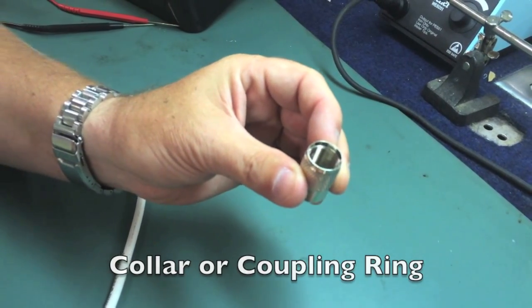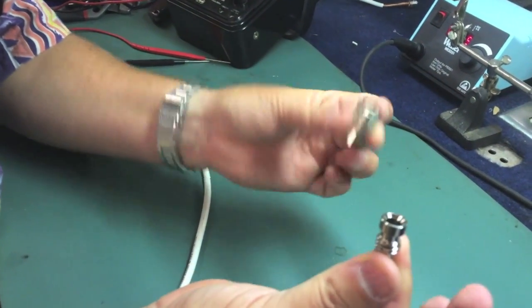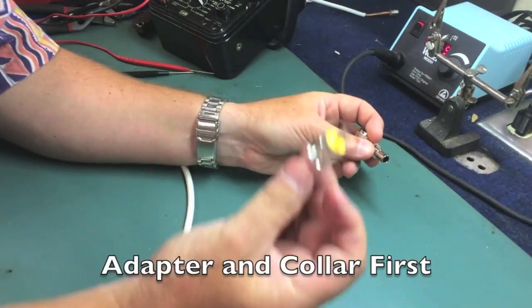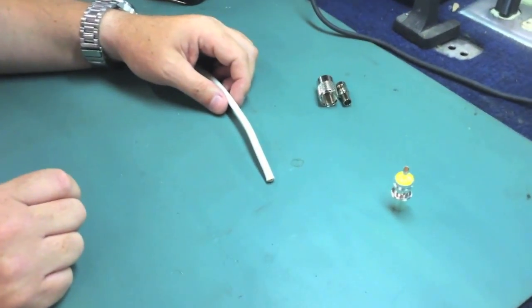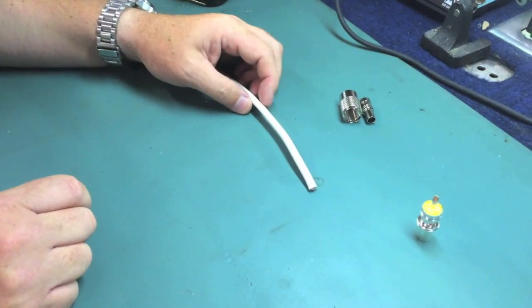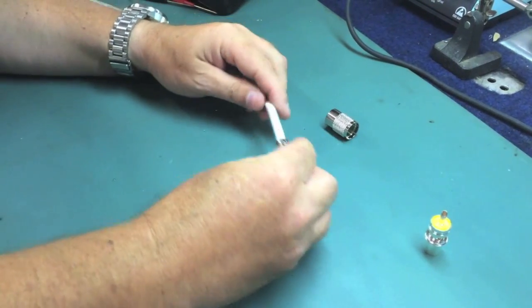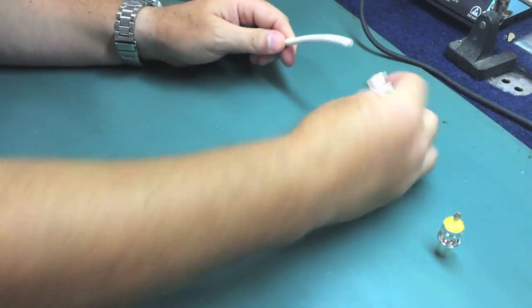A very important thing is when you're putting the connector on, you want to make sure that your adapter and your collar are put on the cable first before you solder this to the end of the cable. Putting a PL259 connector is not as difficult as it seems. It's actually quite straightforward. Again, as I said before, you want to make sure that your adapter and your locking collar are put on the cable before you try to put the connector on.